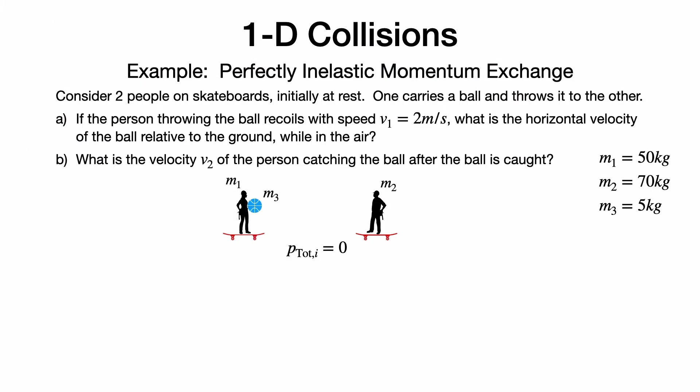Now let's consider a slightly more complicated example called perfectly inelastic momentum exchange. Two people on skateboards are initially at rest, and one person is carrying a ball and will throw it to the other. If the person throwing the ball recoils with a speed V1 equal to 2 meters per second to the left, what is the horizontal velocity of the ball relative to the ground while it is in the air? After the ball is caught, the ball and the other person travel together with some common velocity V2. What is the velocity V2 of the person catching the ball after the ball is caught?